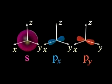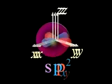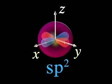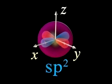Mixing of an S with the PX and PY orbitals produces three equivalent hybrid orbitals in the XY plane. We call these SP2 hybrid orbitals.